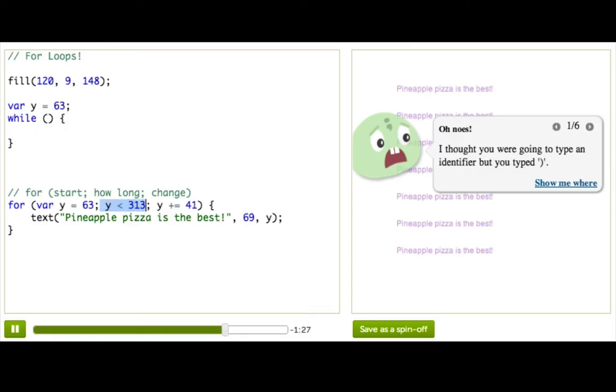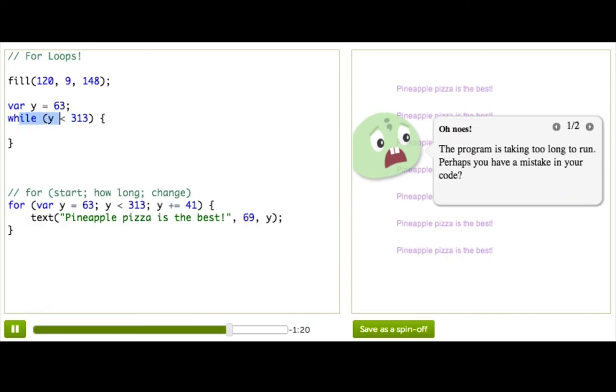Then you think about, well, where should this condition go? That's pretty easy, you probably remember that usually the stopping condition, or the repeat until condition, needs to go inside here. We're going to say that while y is less than 313, we'll just keep going.